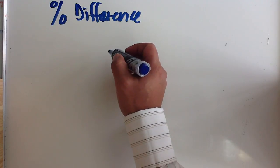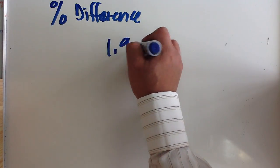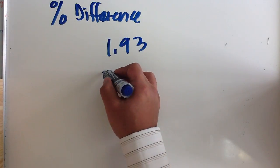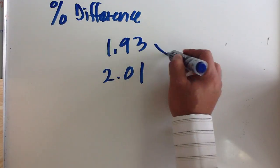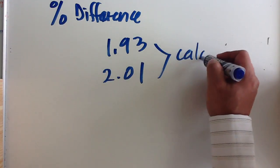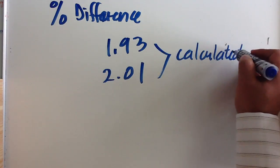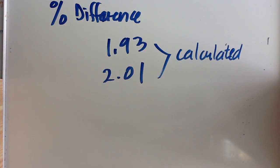Let's say you've got a measurement of 1.93 and another measurement of 2.01, and both of these you have calculated. So you've not been provided with a true value. In that case, to work out the percentage difference,